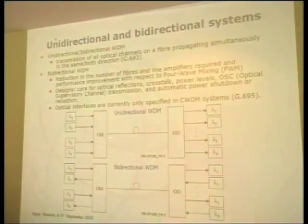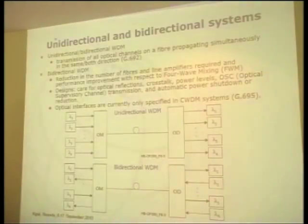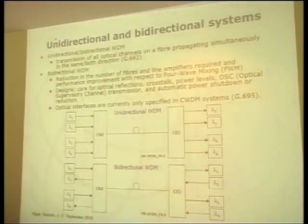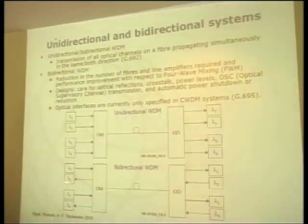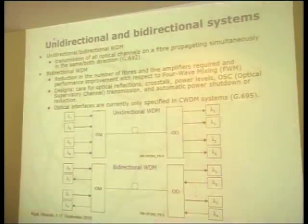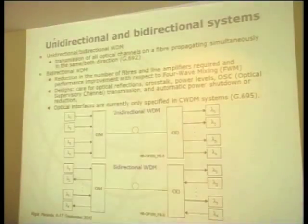The system may be unidirectional or bidirectional. A unidirectional system contains only a unidirectional flow of optical signals and is most commonly used. A bidirectional system carries both directions in one fiber, which seems cost-effective since normally two fibers (up and down) are used, but it is problematic due to optical reflection, crosstalk, and other difficulties.